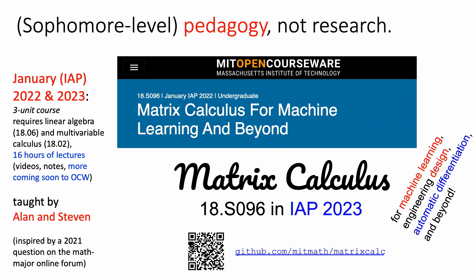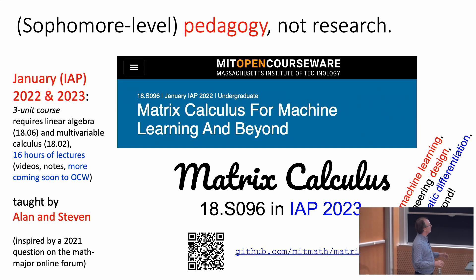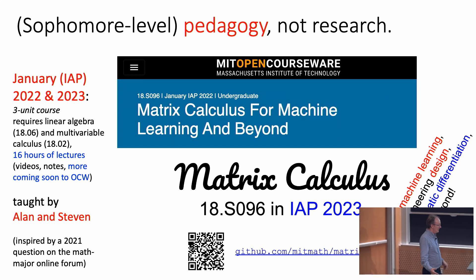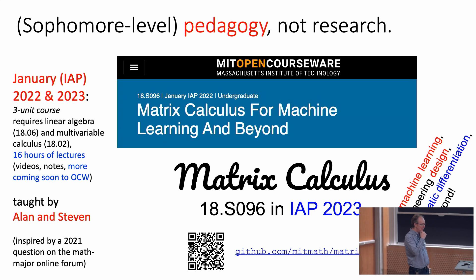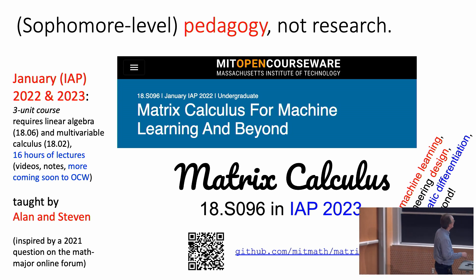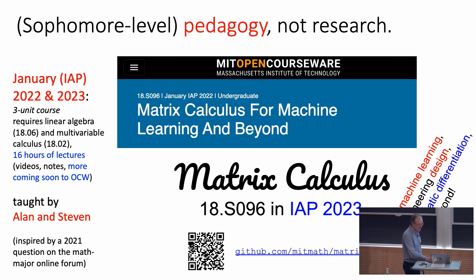This is a sophomore-level class. The only requirements are multivariable calculus (18.02) and basic linear algebra (18.06). It's something I think should be part of more and more undergraduate curriculums, and it was actually inspired by a question on the math major forum, which I'll show you in a minute.